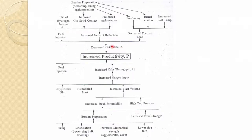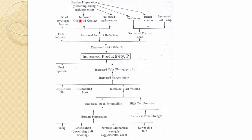To decrease the coke rate, one can use burden preparation — screening, sizing, and agglomeration. Use of hydrogen-bearing materials is beneficial since hydrogen has higher reduction potential, which decreases the coke rate and improves gas-solid contact. Pre-fluxed agglomerates also help, as does increasing the blast temperature. Fuel injection further substitutes coke and reduces the coke rate. Most of these factors have been discussed before.